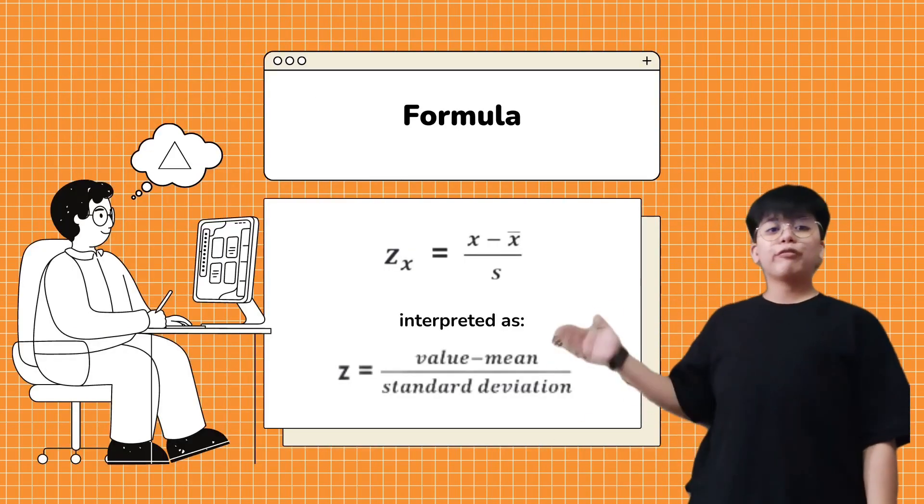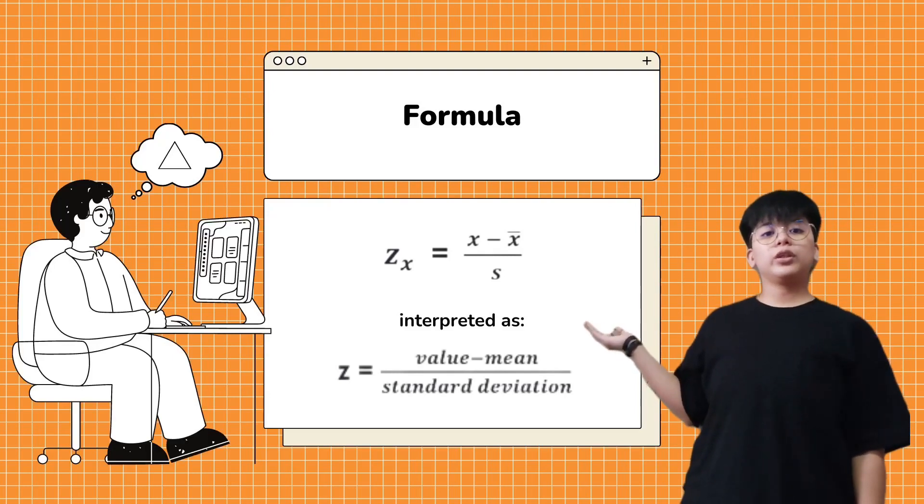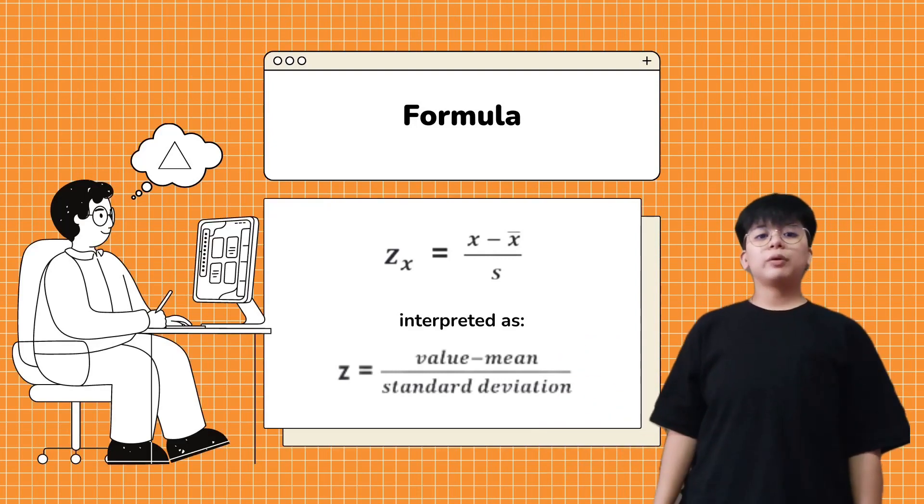But before that, let us go first to the formula. To find the z-score, the formula we will use is Z equals X minus sample mean over S. It is interpreted as Z equals value minus mean over standard deviation.